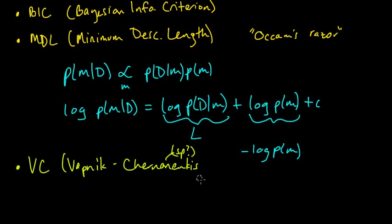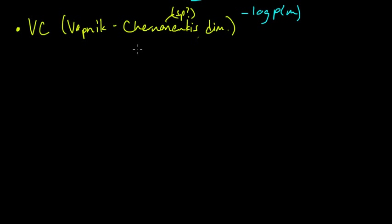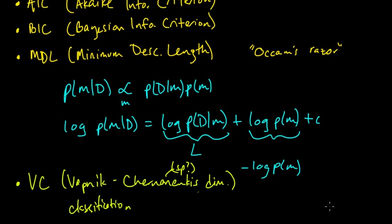The Vapnik-Chervonenkis dimension. And very roughly, let me just give you the rough idea behind Vapnik-Chervonenkis dimension. The rough idea is that you penalize models which can, so this is specialized to classification, and you penalize models that can separate more complex data. So I'm not going to say more than that, but just the basic idea is that you penalize models which can have more wiggly decision boundaries. So if they can separate lots of different types of data sets, then they have higher VC dimension. And so if you were doing model selection using this, you would favor models that are less complex, that have less wiggly decision boundaries.